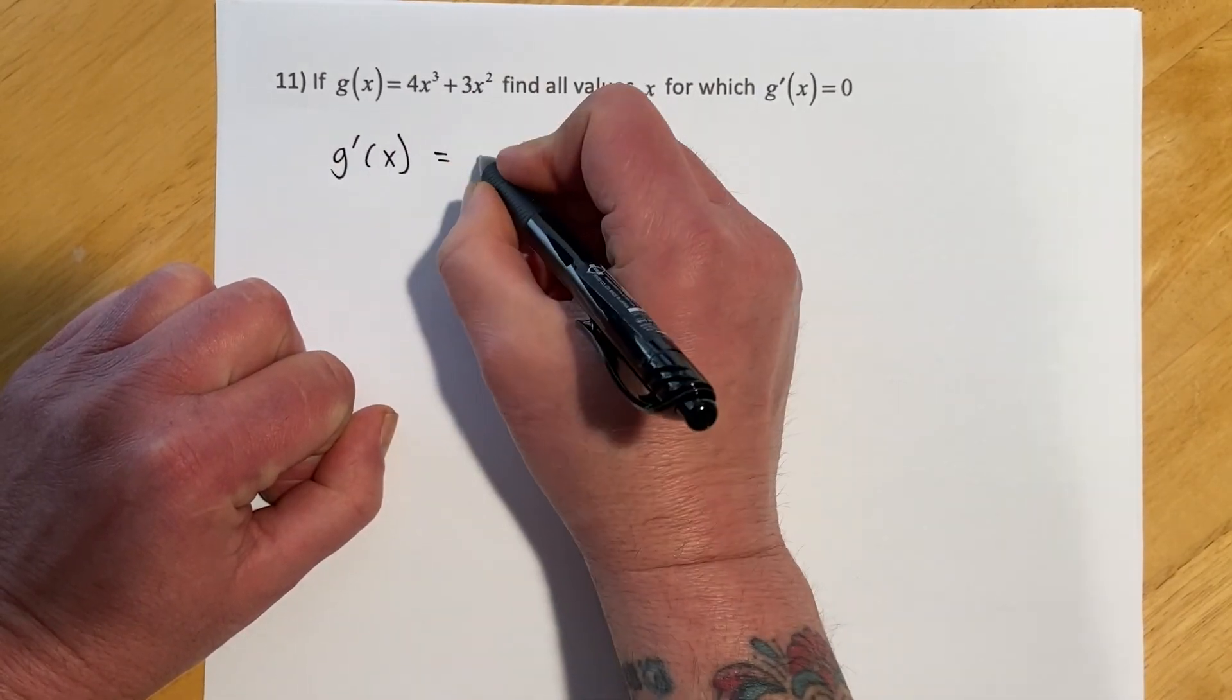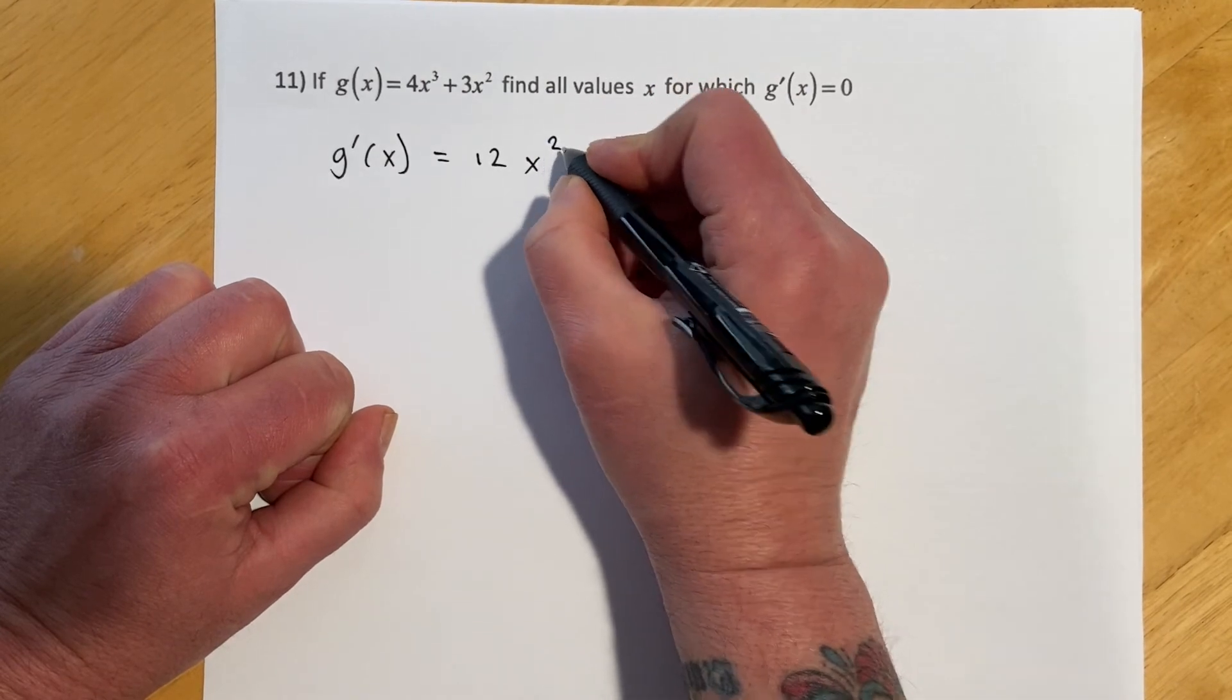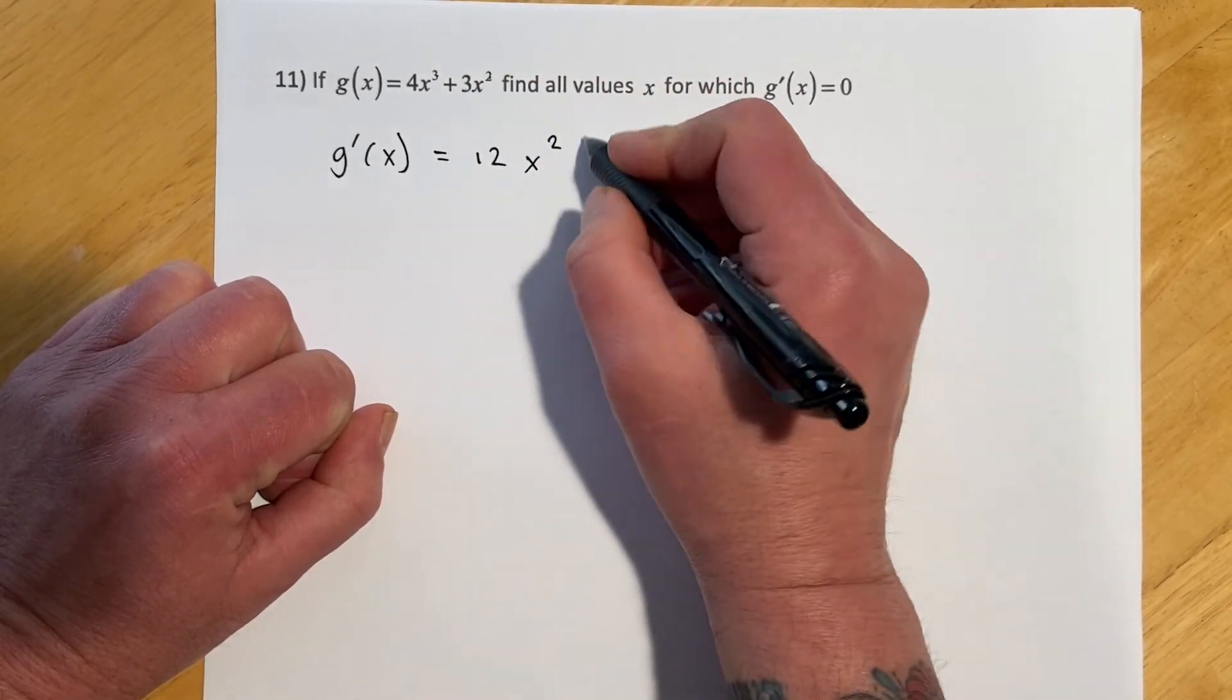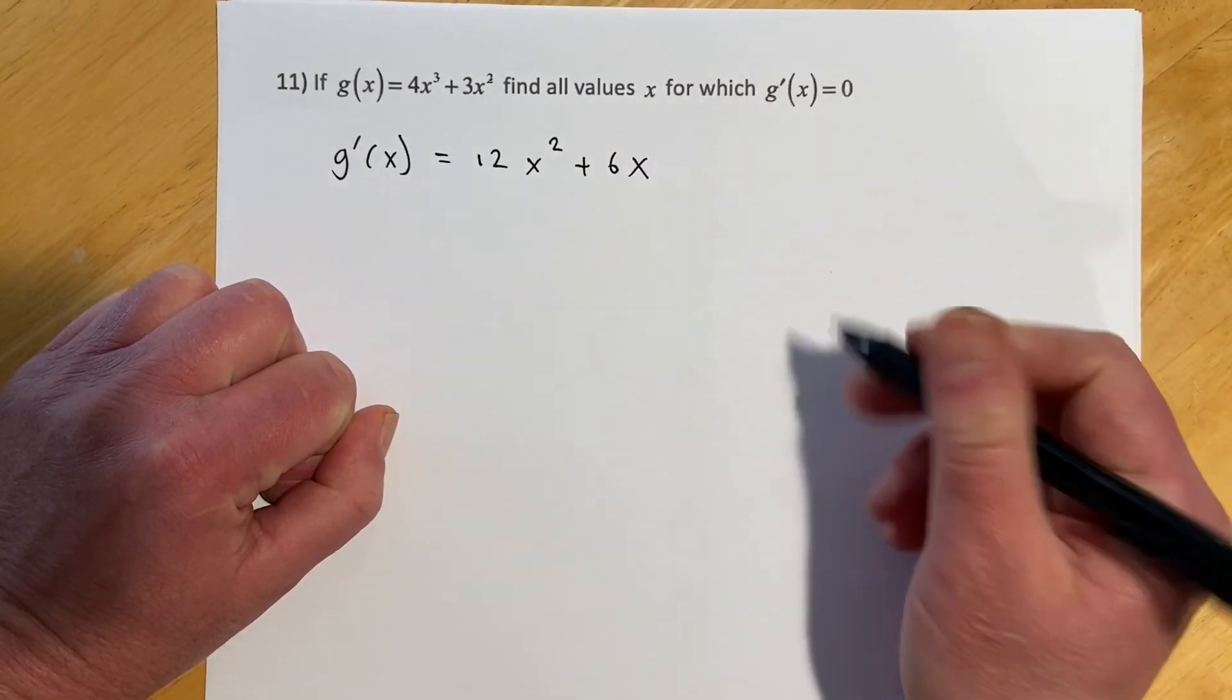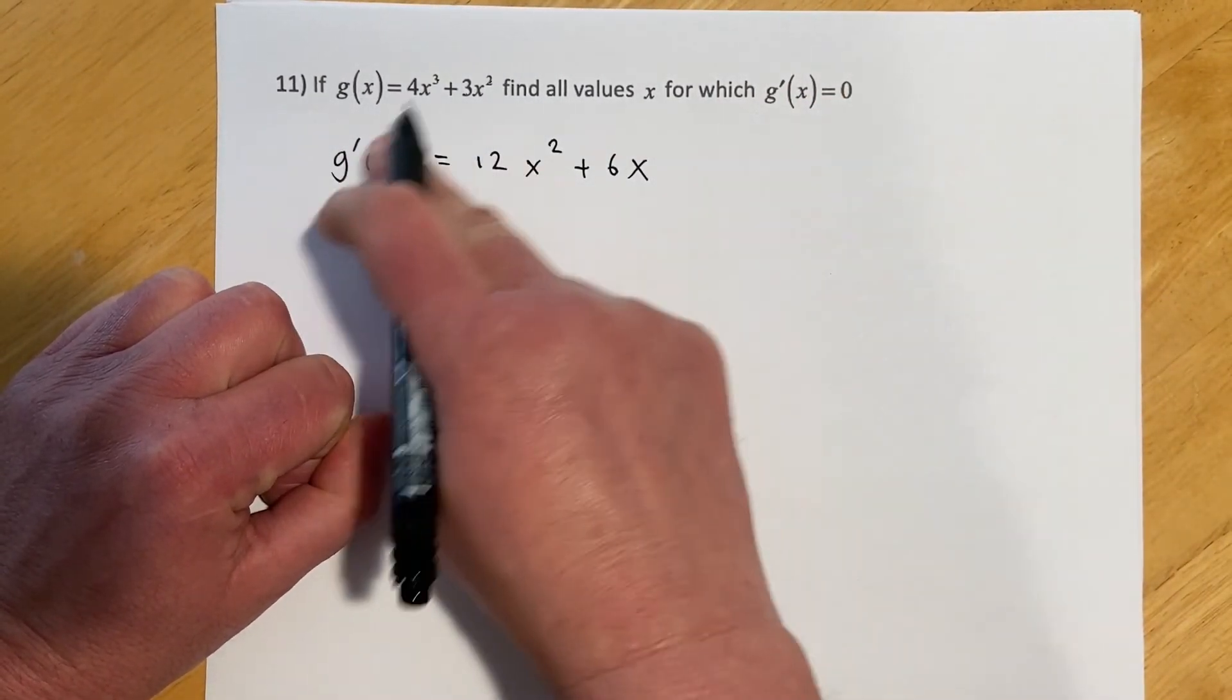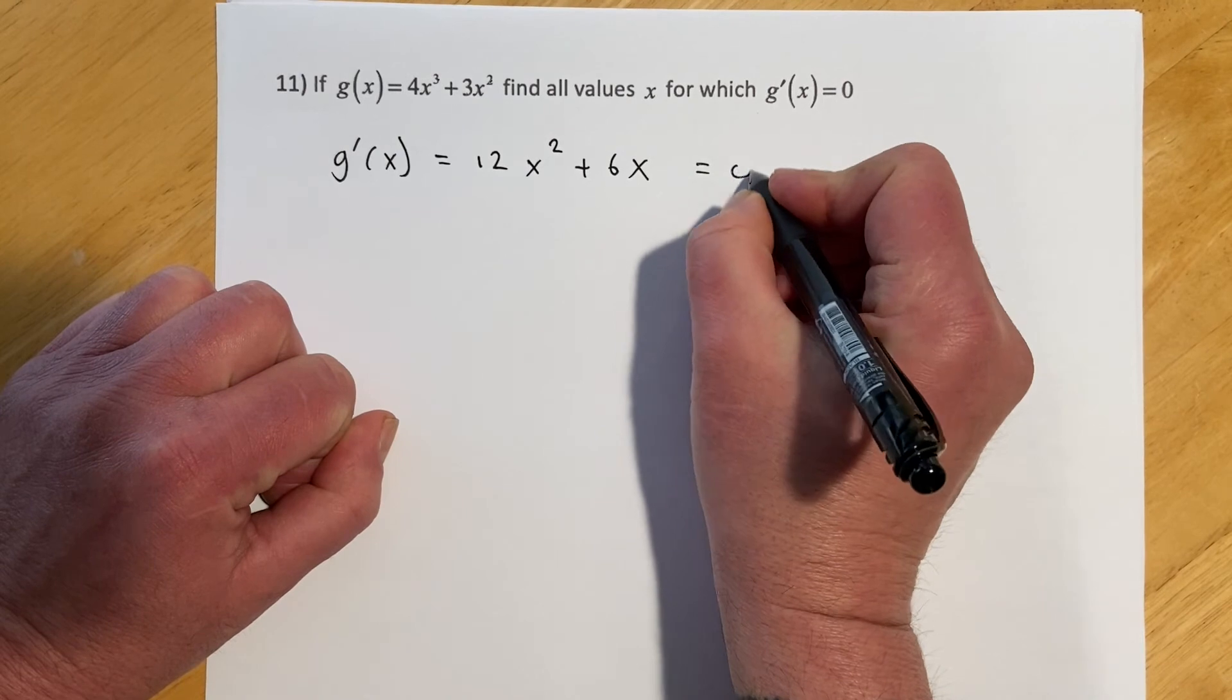So first thing we're going to do is find g prime. So it will go 3 times 4 makes 12x take 1 off squared, and then 2 times 3 makes 6x take 1 off to the first.